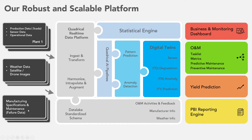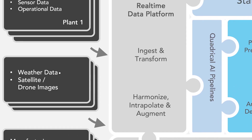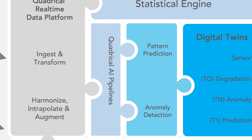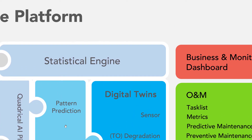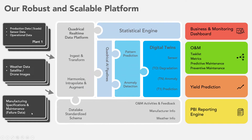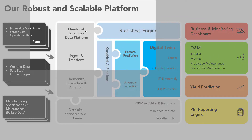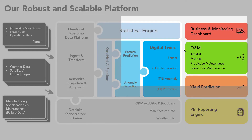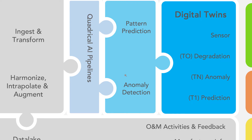So once again, press Ctrl and use your mouse wheel to zoom in, then either use the cursor or arrow keys to explore the slide. You could also use the magnifying glass icon to highlight certain sections of the slide. And that's how you zoom in to a slide while presenting.